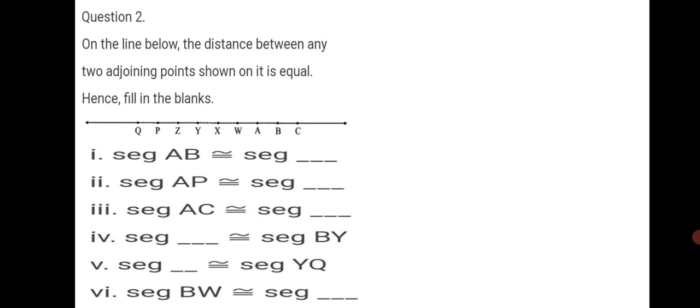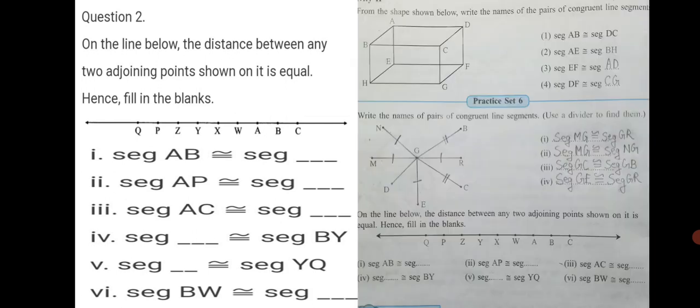Seg AB is congruent to which segment. We see seg AB is here. A, B. From A to B, only 2 points are covered. You can take, again this question has got multiple answers. You can take any 2 points. Y, X, X, W. Any 2 points. Let's have a look at the answer. Seg AB is here on the number line. Now, we have to choose its congruent.